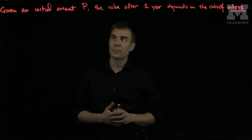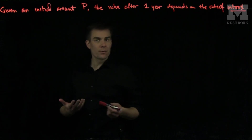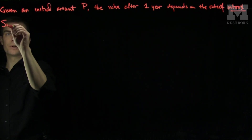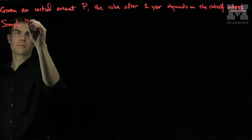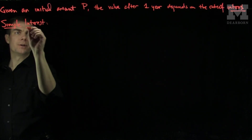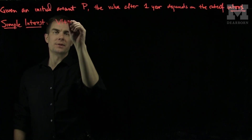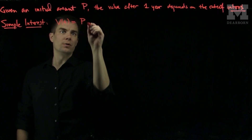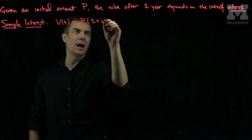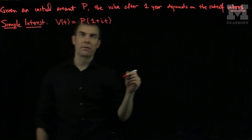So, if we're given an initial amount p, the value after one year depends on the rate of interest. There are three particular types of interest which we'll focus on. The first type of interest is simple interest, and with simple interest, our value at time t is our initial value p times 1 plus i t. So, I have a linear growth of the value.